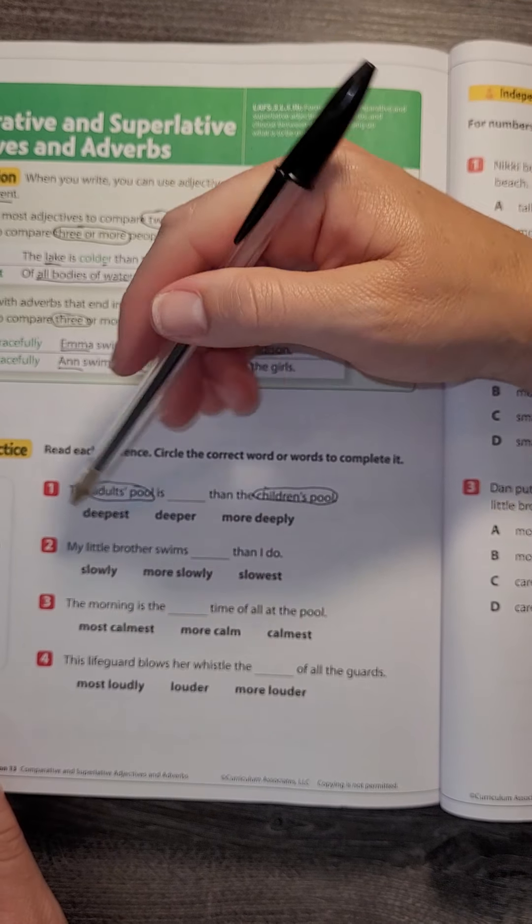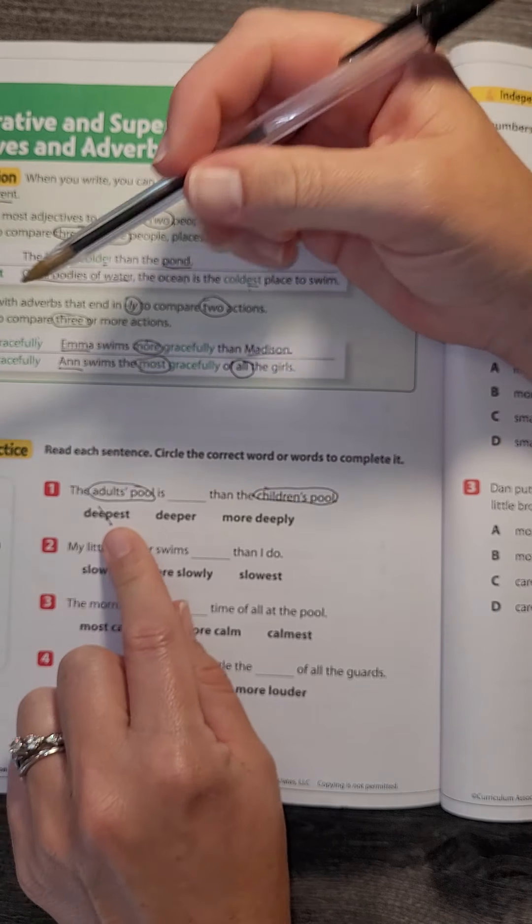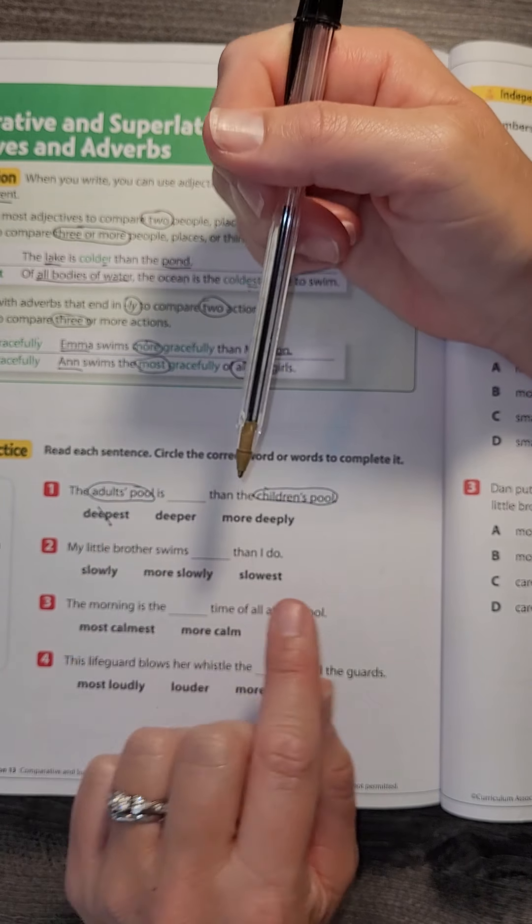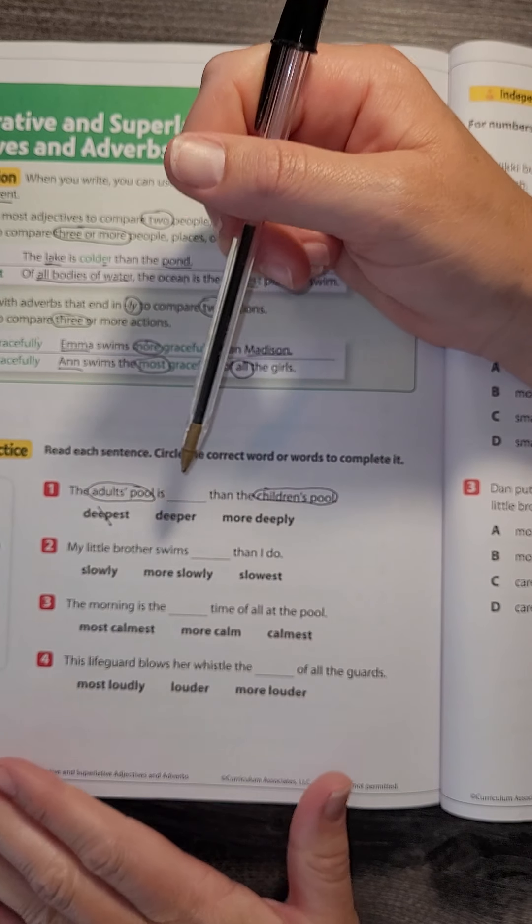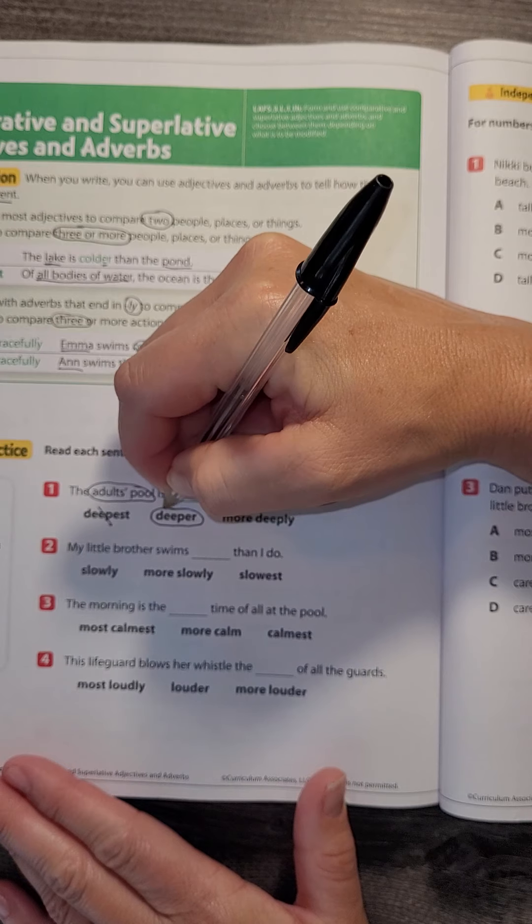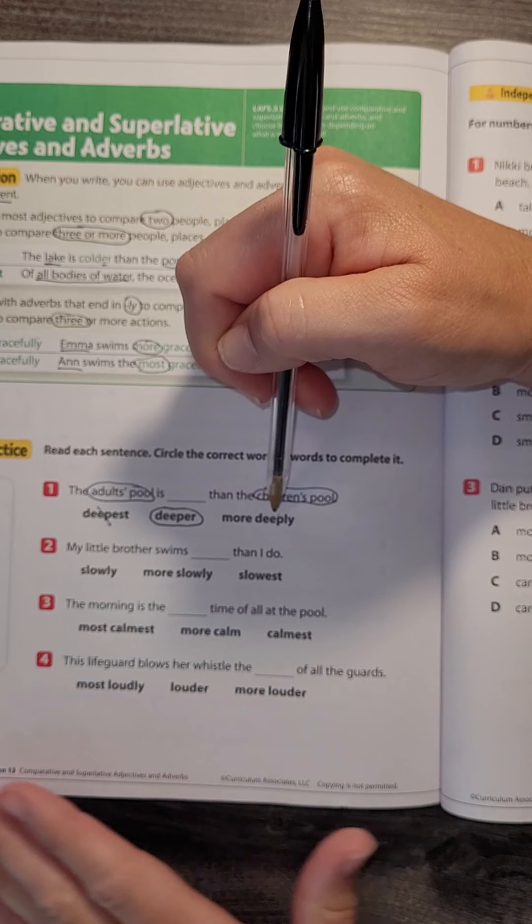So I know it's not 'deepest' because that's three or more. So am I describing it as a verb or is it just a comparison? In this case we would say 'deeper' because 'deeply' would be an action and it's not that.